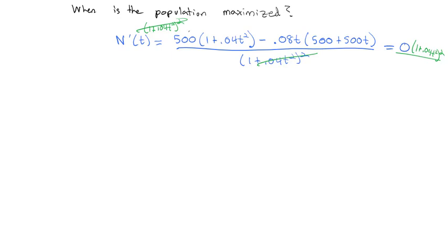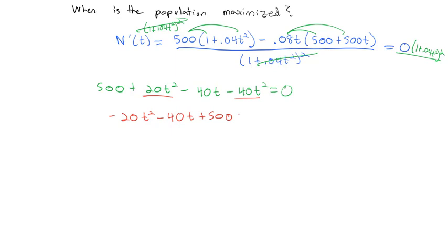Then I'm also going to distribute. So we have 500 plus 20t squared minus 40t, continuing to distribute, minus 40t squared equals 0. And since we have t squareds and t's in this problem, let's combine like terms. So we have negative 20t squared minus 40t plus 500 equals 0.